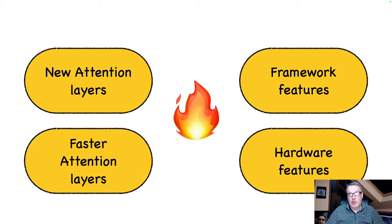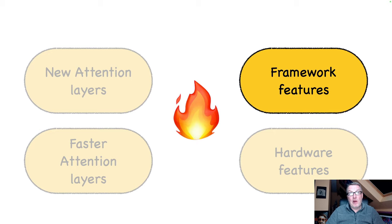As their name implies, large language models are large. And there's always the need to shrink them, to help them fit into less memory. And there's always the need to accelerate them, and particularly accelerate inference. In past videos, I've covered different techniques like new attention layers, faster attention layers, hardware acceleration, model compilation. And today we're going to focus on another framework-level feature — quantization.